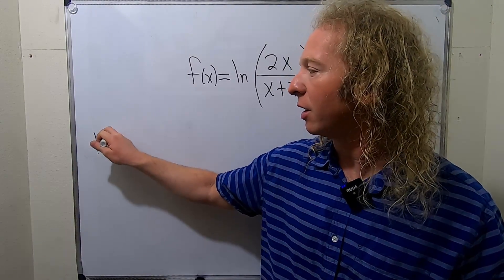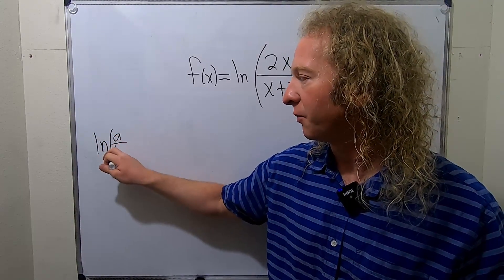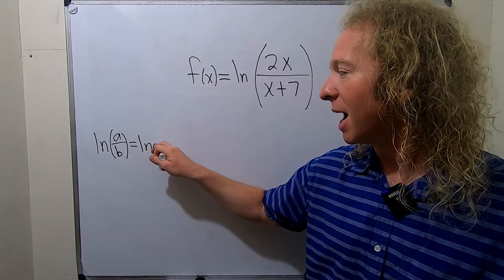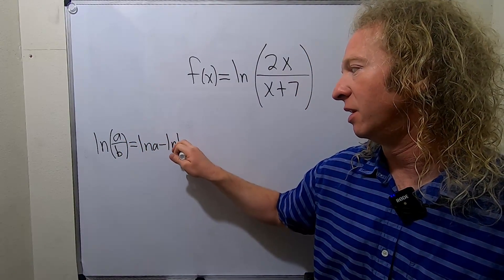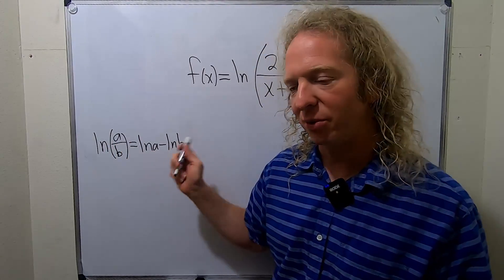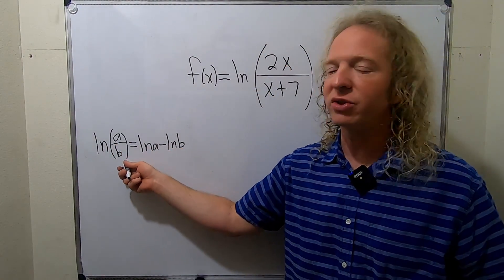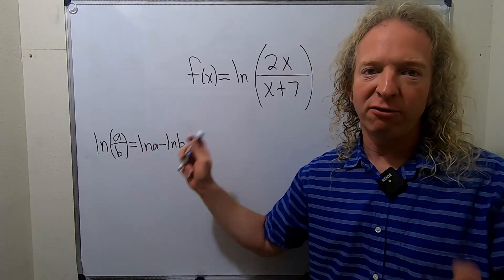Recall if you have the natural log of a over b, this is equal to the natural log of a minus the natural log of b. So the fraction turns into subtraction. So the first thing we'll do in this problem is use this rule. This is called the quotient rule property for logs.